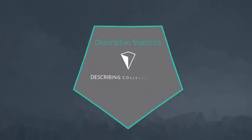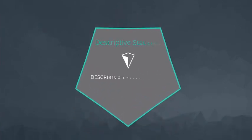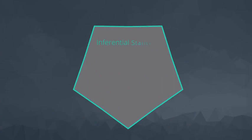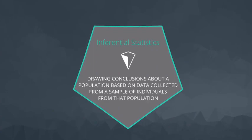The topics covered thus far have all been aimed at descriptive statistics — that is, describing the data we've collected. There's an entire other field of statistics known as inferential statistics that's aimed at drawing conclusions about a population of individuals based only on a sample of individuals from that population.